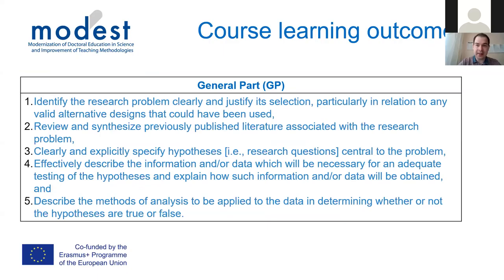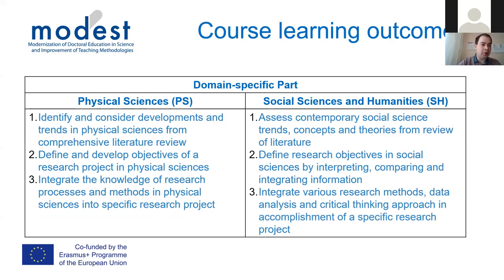The basic approach of subdividing the areas into social sciences and physical sciences is reflected in the learning outcomes and all other course categories. Starting with a general part suitable for any university in humanities and natural sciences, the content covers identifying the research area, performing literature review, setting and testing hypotheses, then applying skills and research methods to achieve good research results. These course learning outcomes are shown on the slide.